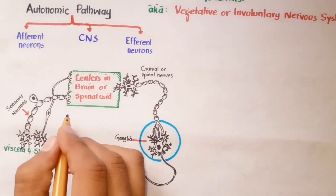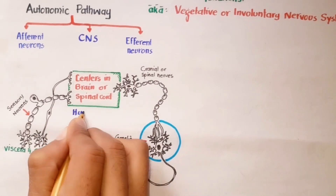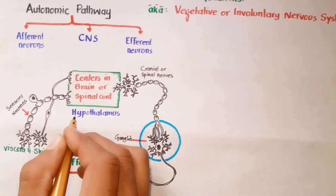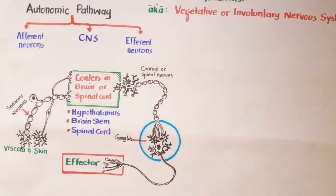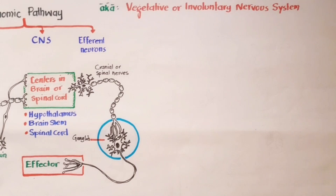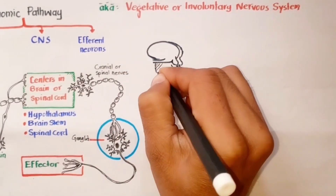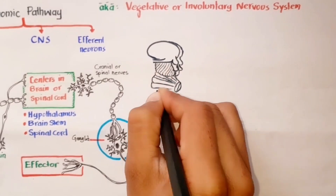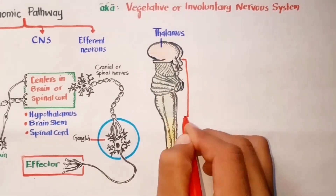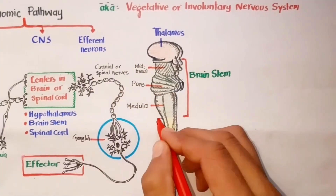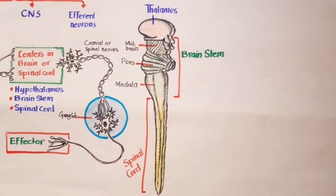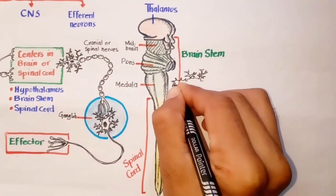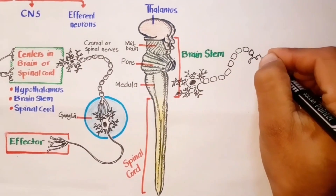The major parts of our nervous system controlling the autonomic functions are the hypothalamus and brain stem, where most of the autonomic centers are present. Some functions are also regulated by the spinal cord. The autonomic nervous system consists of motor portions of some cranial nerves from the brain stem, and spinal nerves from the spinal cord. This is the brain stem and spinal cord that I have drawn here, and the autonomic neurons actually arise from here.